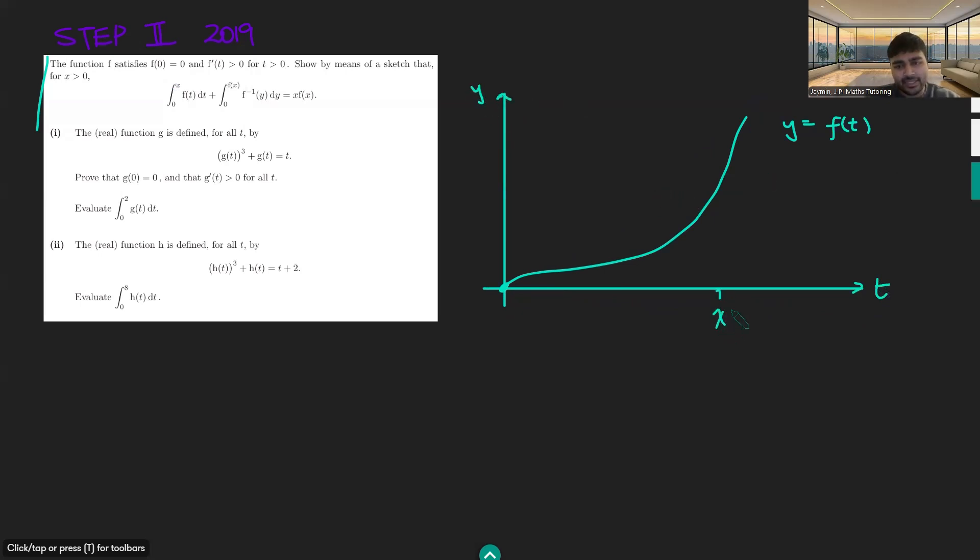Okay, let's say x is somewhere here, and we're going to draw a vertical line up there, and a horizontal line here. And what would this value be? Well, if that value's x, this would have to be f(x). And now, conveniently, the area of this rectangle is x times f(x), which is that there. And so if we can show that the area of this rectangle equals two different integrals added together, we'll be in a good position.